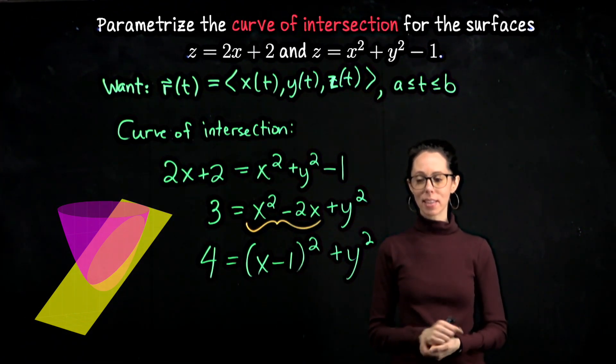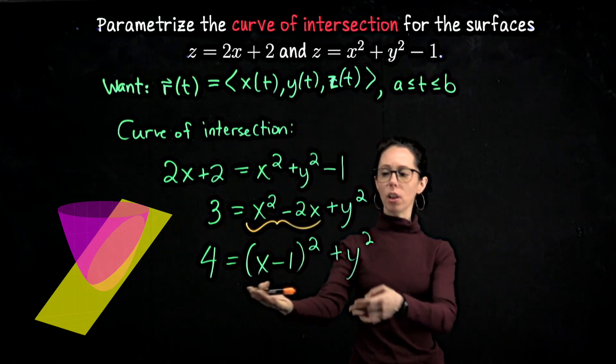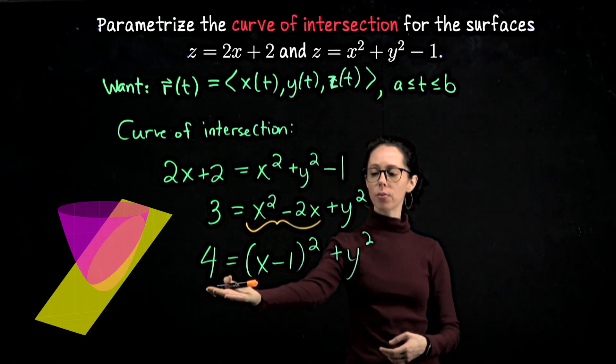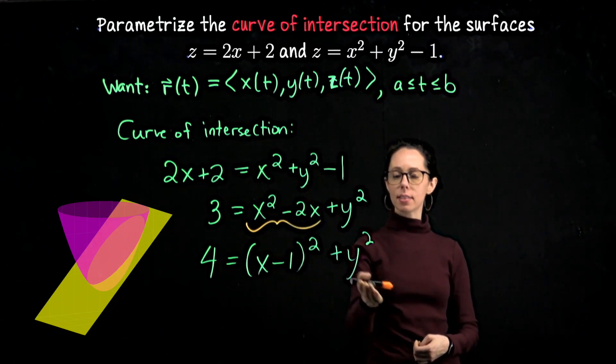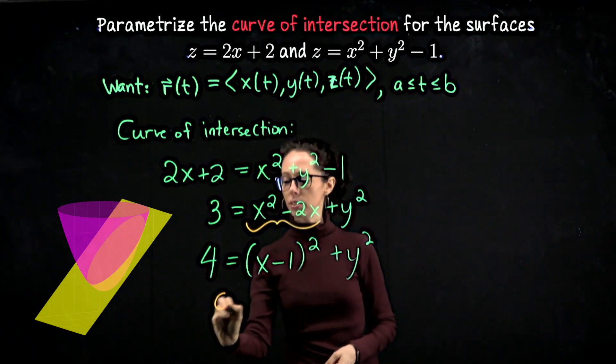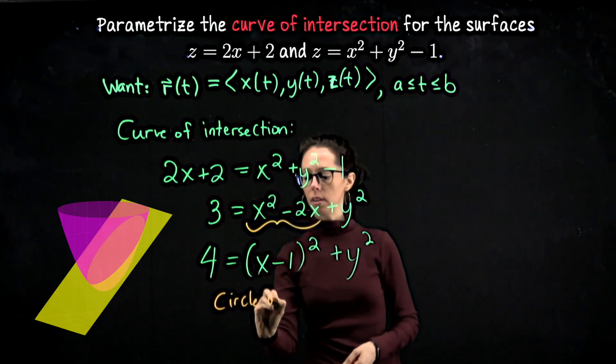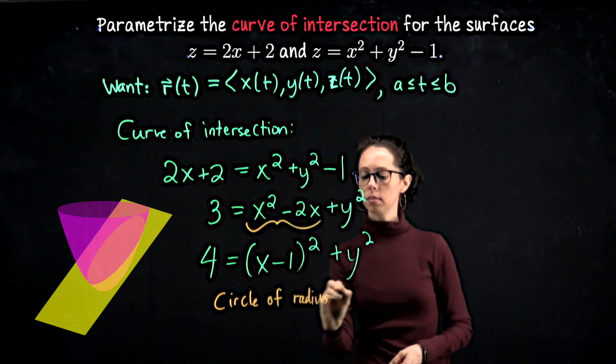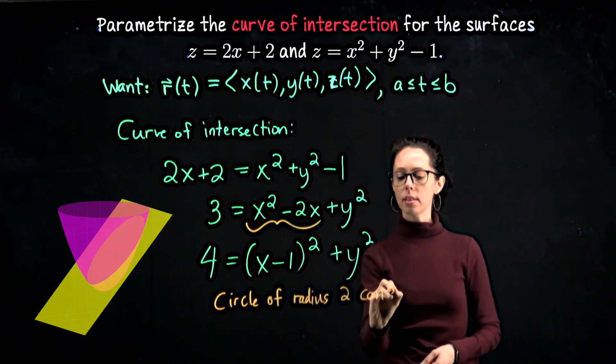For the x and y coordinates, this equation defines a circle of radius 2, the square root of 4, centered at 1, 0. So this is a circle of radius 2 centered at 1, 0.